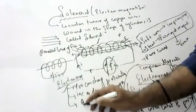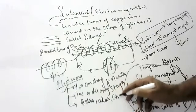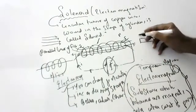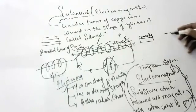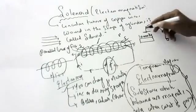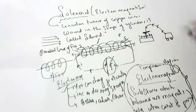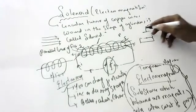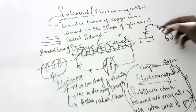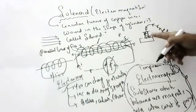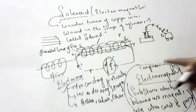Electromagnets are used in bells, alarms, and cranes. In a crane, a strong electromagnet is attached. Switch on the current and it attracts a large iron object — even 10,000 kg. The crane carries it to the required location. Switch off the current and the magnetism is gone; the object detaches and falls. With a permanent magnet, once attached you cannot detach it — that is why electromagnets are very useful.